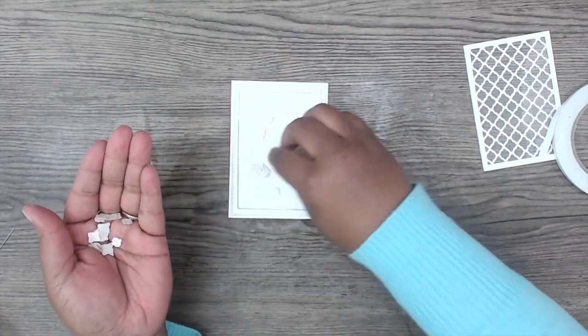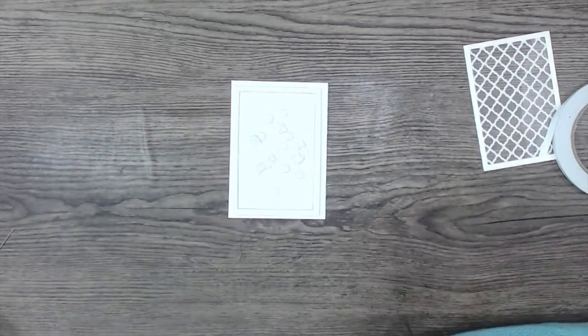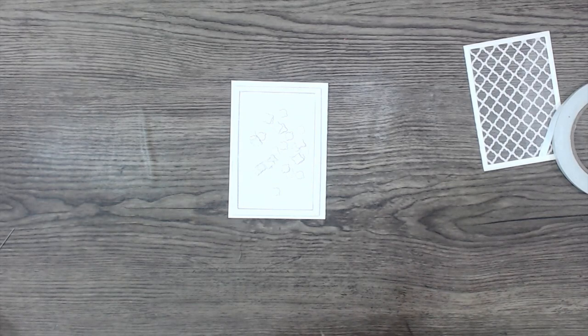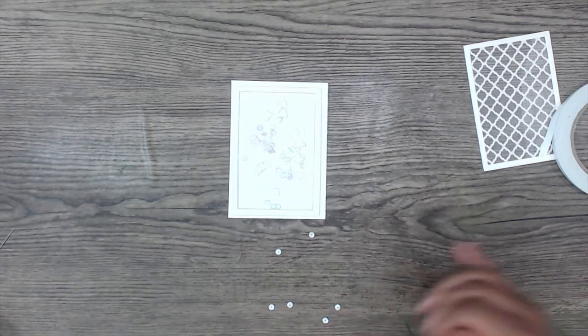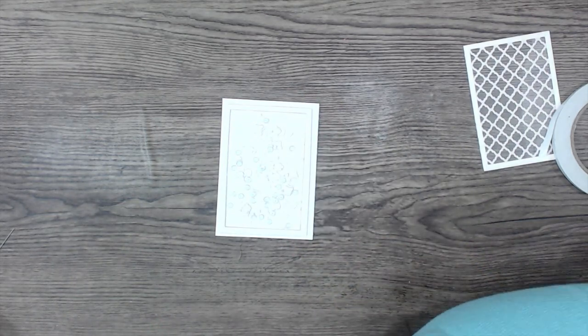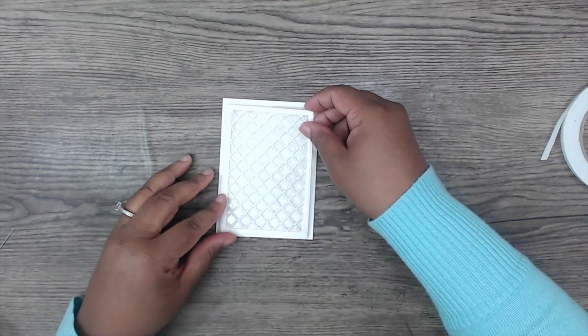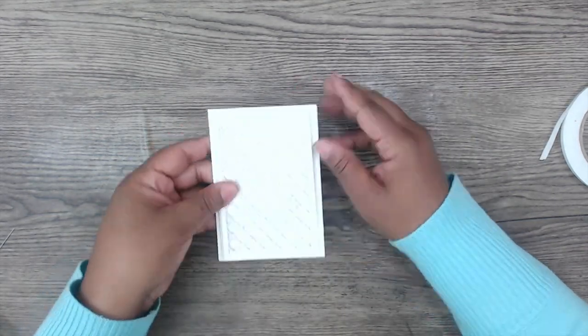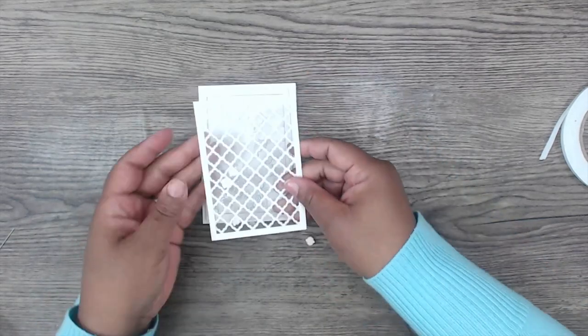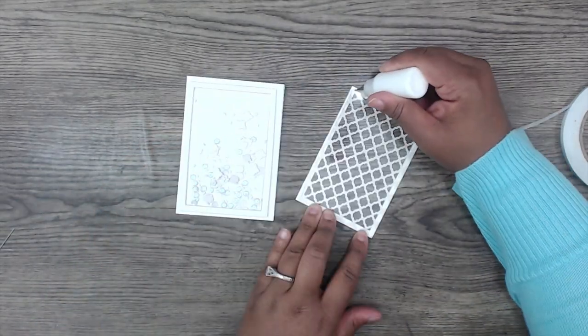So I am using actually the negative pieces from the fancy lattice die to start as my sequins, my shaker mix. Then I'm adding a little bit more seed beads and some sequins from my stash. And then I'm going to attach the card front. I always test to make sure I have enough room for the sequins mix to move around.